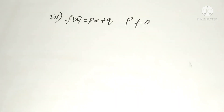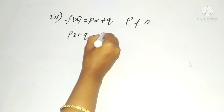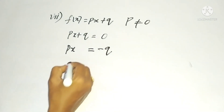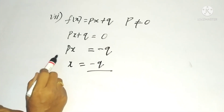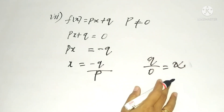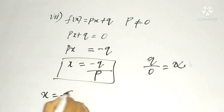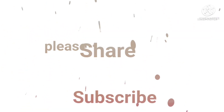The seventh and last problem: f(x) = px + q, where p ≠ 0. Take the polynomial and equalize to zero. Then px = -q, and since p is in multiplication, when we transpose it comes under division. If p were zero it would be infinite, but since p ≠ 0, x = -q/p is the zero of f(x). These are the solutions for the fourth problem.